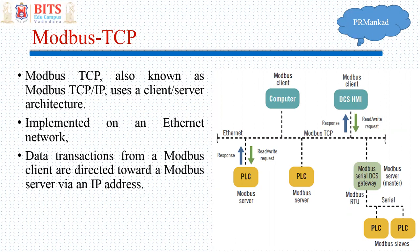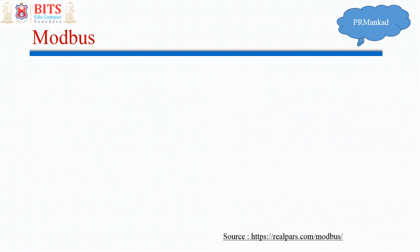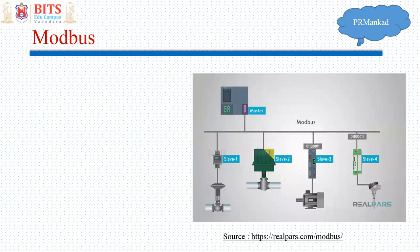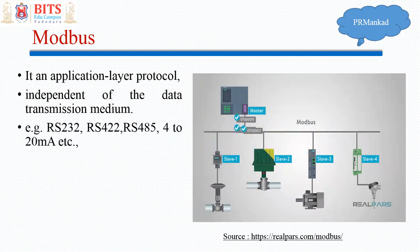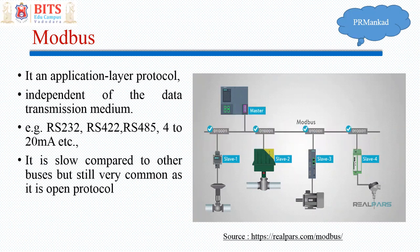Each server and client has a unique IP address. When the master sends a request, the slaves respond — it is an application layer protocol, independent of the data transmission medium. You can have different transmission media like RS-232, RS-422, RS-485, and others. It is slow compared to other buses, but it remains very common and widely used.